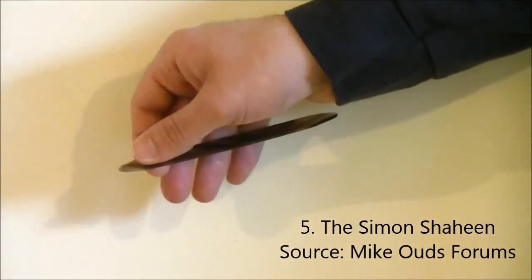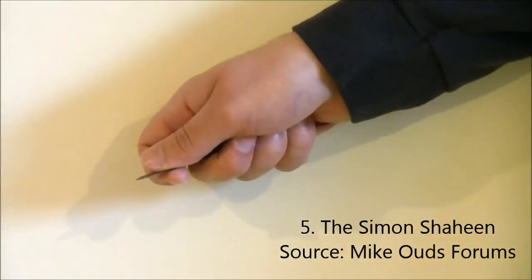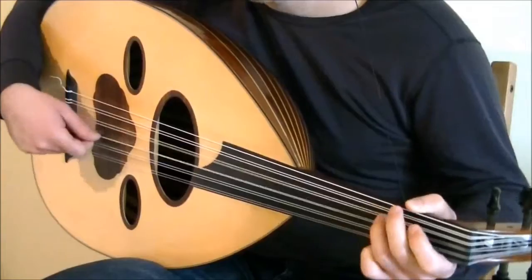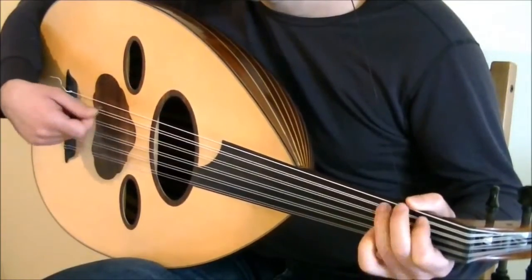Simon Shaheen holds his risha flat in the palm like the traditional way. The angle is parallel to the strings and doesn't come down on the string at too much of an angle. He holds it short, firm and relaxed.